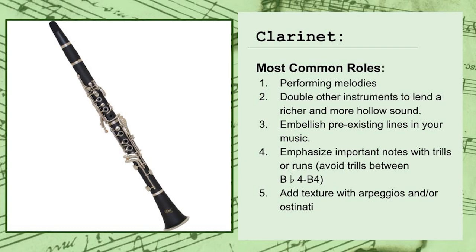Much like the flute, the clarinet is one of the more versatile and agile instruments in the woodwind family. It can perform melodic material anywhere in its preferred registers, and you can use it to add a hollower and somewhat richer quality to your sound when doubling other instruments. Or you can embellish other lines in your orchestration, or add energy by emphasizing moments in your music with trills or runs. Just avoid writing trills or other rapidly repeating lines around the instrument's break point, which just won't sound the way you want it to.